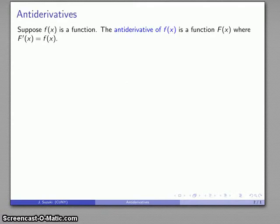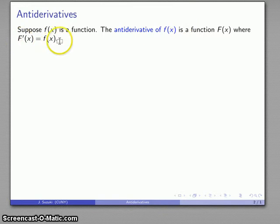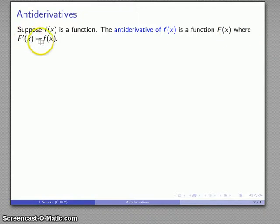The basic idea behind an antiderivative is fairly straightforward. Suppose I have some function — the antiderivative of that function is going to be some other function whose derivative is what I start with. So I could say: find a function whose derivative is this original function.